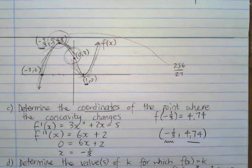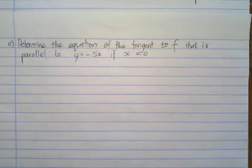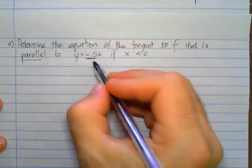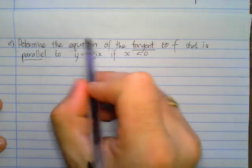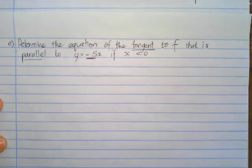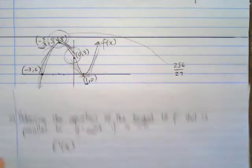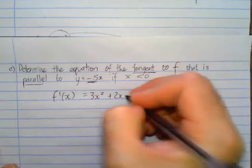The last question for this task here is letter E, which says determine the equation of the tangent to f that is parallel to y = -5x, if x is negative. So first of all, if we have parallel lines, -5 there is simply going to be the gradient of the tangent that we're looking for. So what gives us the gradient of the tangent? The first derivative.